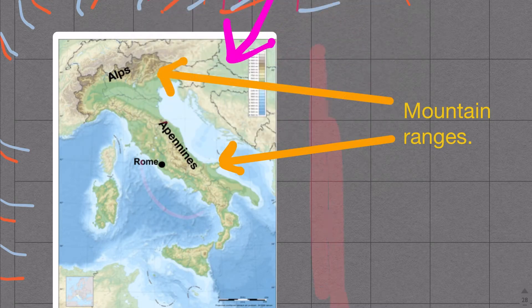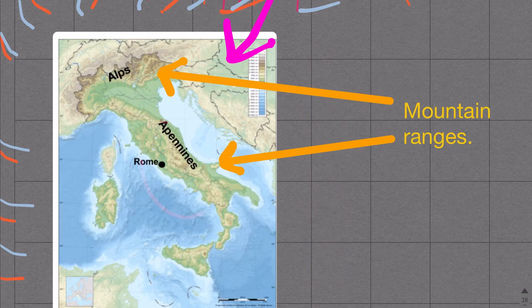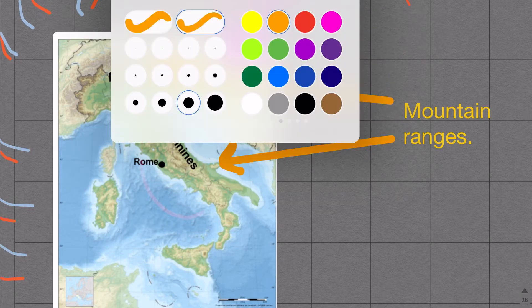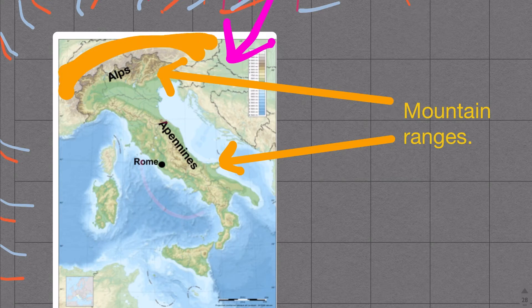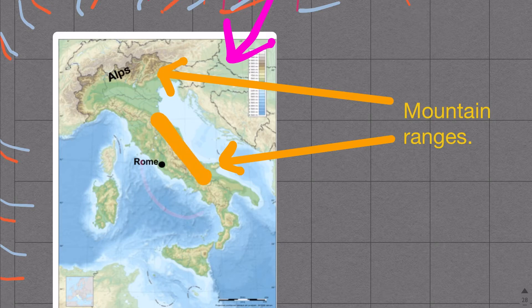I wrote in here that there are mountain ranges, which is important for us because it offers the peninsula of Italy a lot of protection up in this area from the northern borders. In the middle of the country we have another mountain range in the center, so it's going to have a varied terrain for sure.